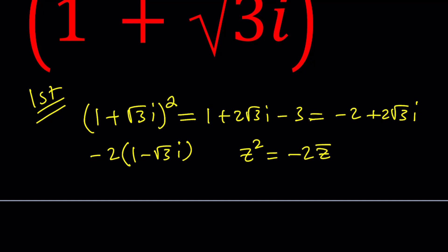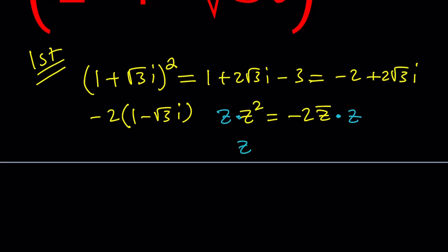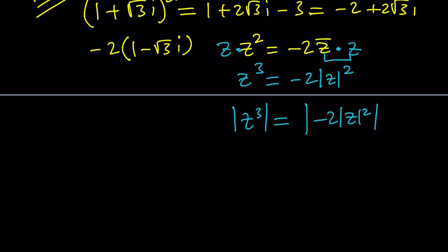So I'm going to multiply by z here. By the way, it doesn't matter if you multiply on the right or left. This gives me z cubed. And these two will actually give me the absolute value of z squared. Great. Now, if you take the absolute value on both sides, we already have an absolute value, but we can take the absolute value one more time. It's going to give us the following. The absolute value of z cubed is going to equal the absolute value of negative 2 times the absolute value of z squared.